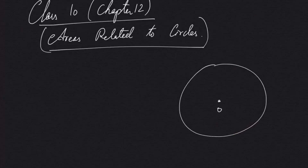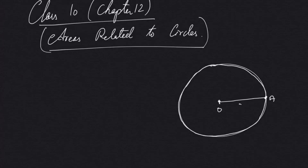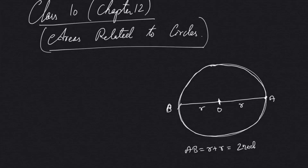In a circle we have a center. The outer boundary region is called the circumference of the circle. If you join one end of the center to one end of the circumference — let's say point A — then this line is the radius. If you extend to the other end B, that is also a radius from the center.